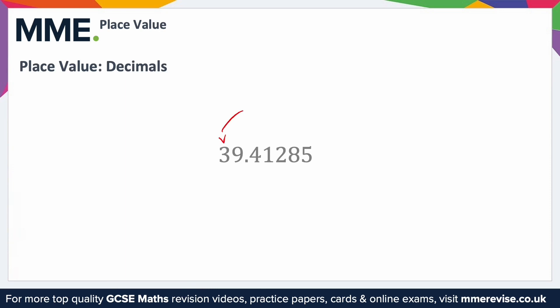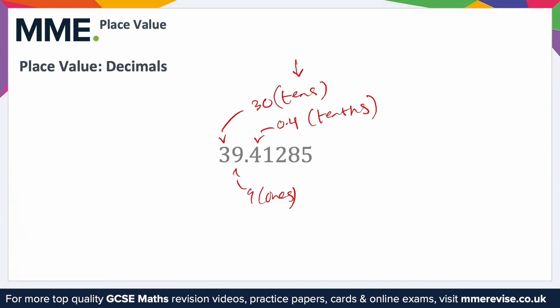To the left of the decimal point, the 3 is 30 because it's in the tens column and the 9 is in the ones column. To the right of the decimal point, the columns work differently — numbers get smaller as you move further from the decimal point. The first digit after the decimal is in the tenths column, so it represents 0.4. Notice the 'ths' suffix: tenths versus tens. The next digit is in the hundredths column, representing 0.01 or one over 100.